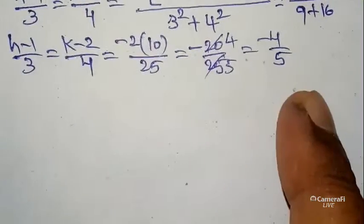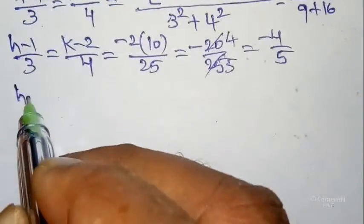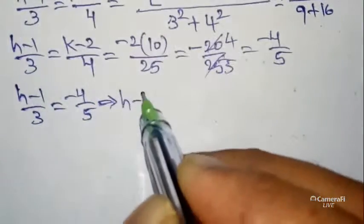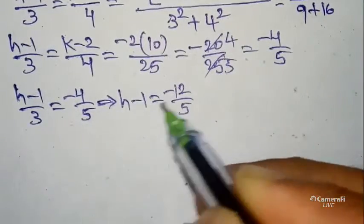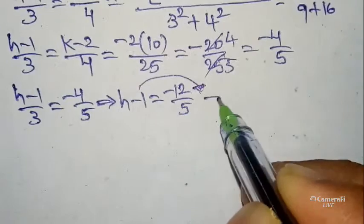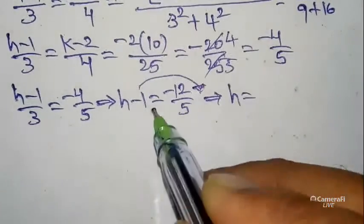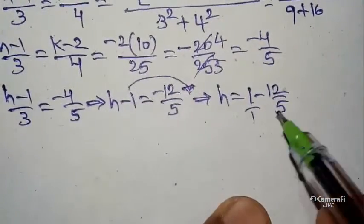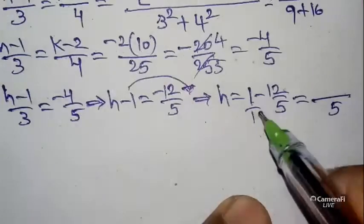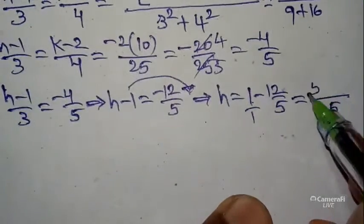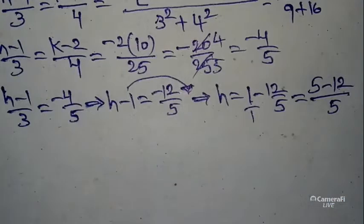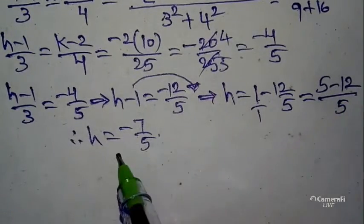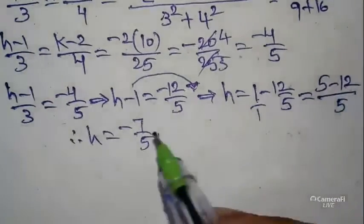To get h value, equate: (h - 1)/3 = -4/5. Cross-multiplying: h - 1 = -12/5. Moving -1 to the other side: h = -12/5 + 1 = -12/5 + 5/5. Taking LCM 5, we get 5 - 12 = -7, so h = -7/5.